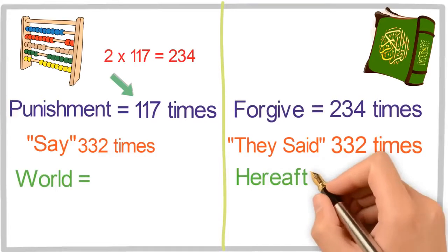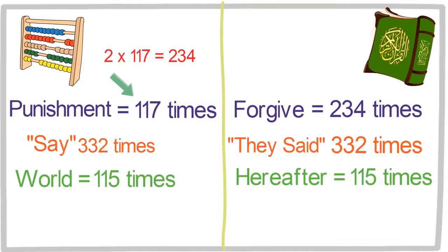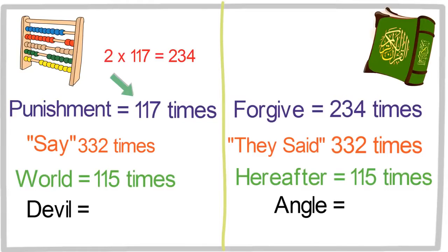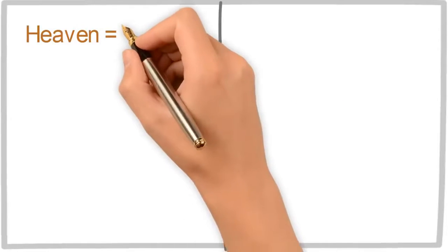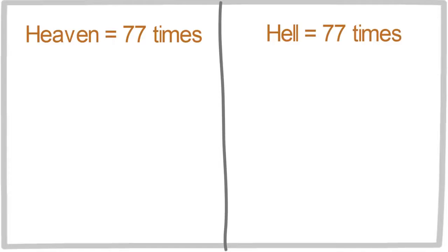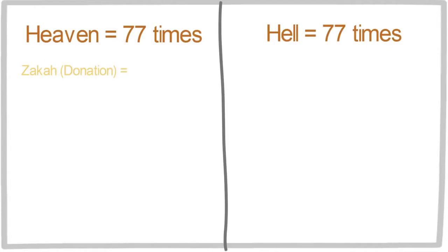Devil and angel, those two words are equally repeated 88 times. Now heaven and hell, those two words are equally repeated 77 times.